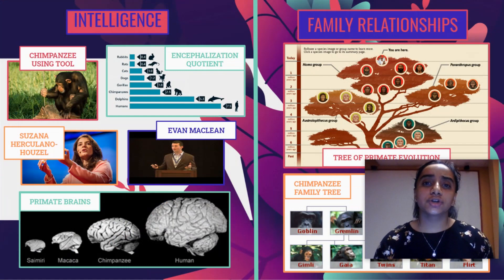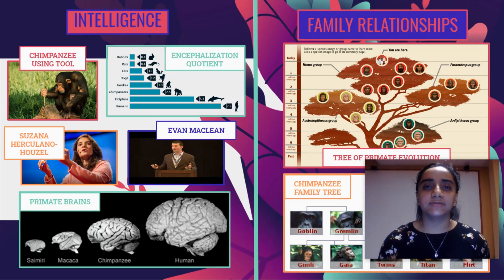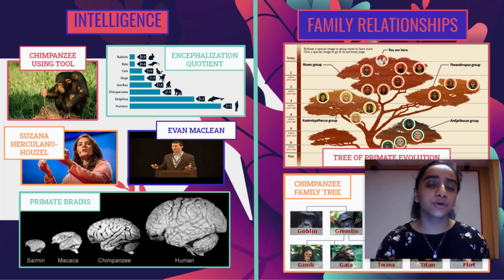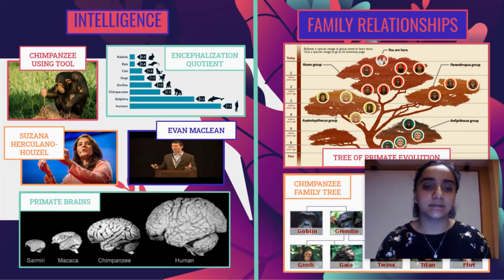Therefore I analyzed how Jane Goodall's research on chimpanzee intelligence, family relationships, communication and emotions, community, stages of life, and research and observation has bettered our understanding of the human psyche. For 200,000 years humans have evolved to become unparalleled in their intelligence — many thought this unprecedented intelligence was something humans had arbitrarily developed, existing nowhere else in nature. However, Goodall has disproved this assumption.